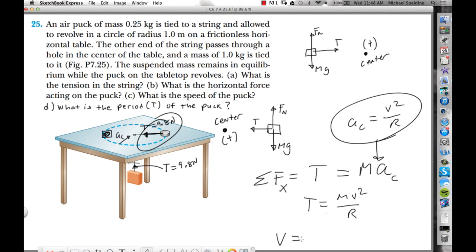So now we can solve for v. v, when you do the algebra, is going to be tr over m square rooted. So tension was 9.8. The radius is 1 meter. And then the mass of the puck is 0.25. So then this comes out as 6.26 meter per second. The puck must be moving at 6.26 meters per second.